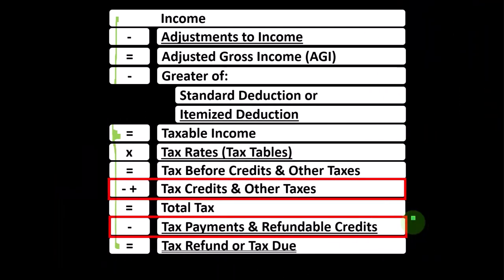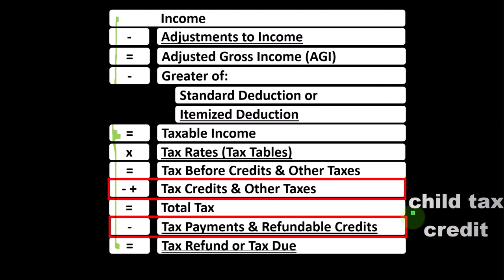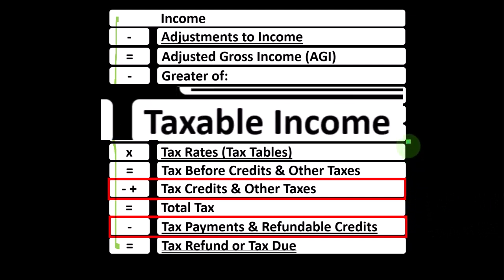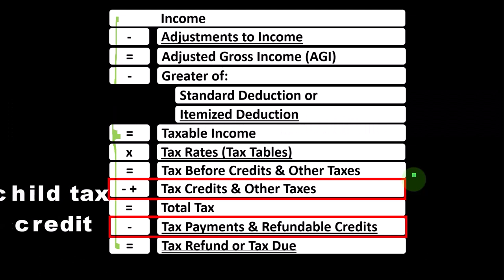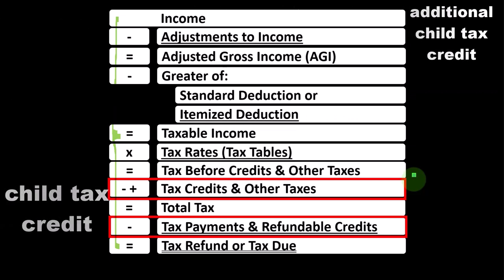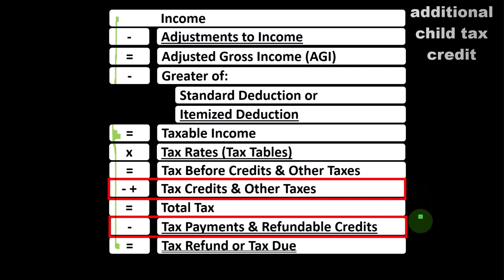The refundable portion could potentially take total tax below zero, making it more like a welfare or benefit program rather than simply a tax credit. For the child tax credit and additional child tax credit, part is non-refundable and part is refundable. The key terminology: the child tax credit is a credit, not a deduction — meaning we get a dollar-for-dollar benefit, with the CTC being non-refundable and the ACTC being the refundable portion.